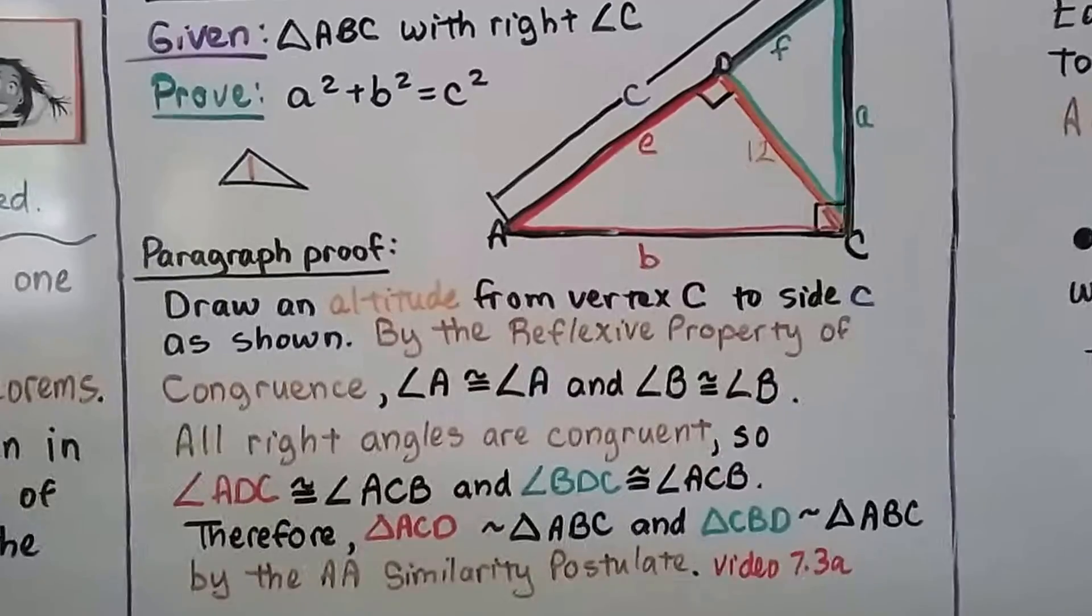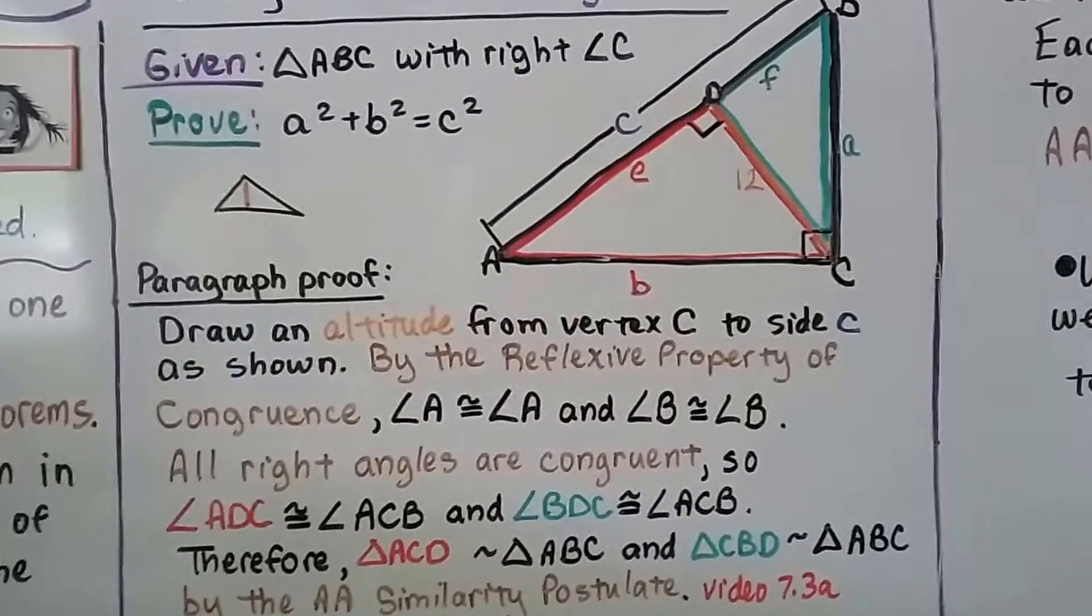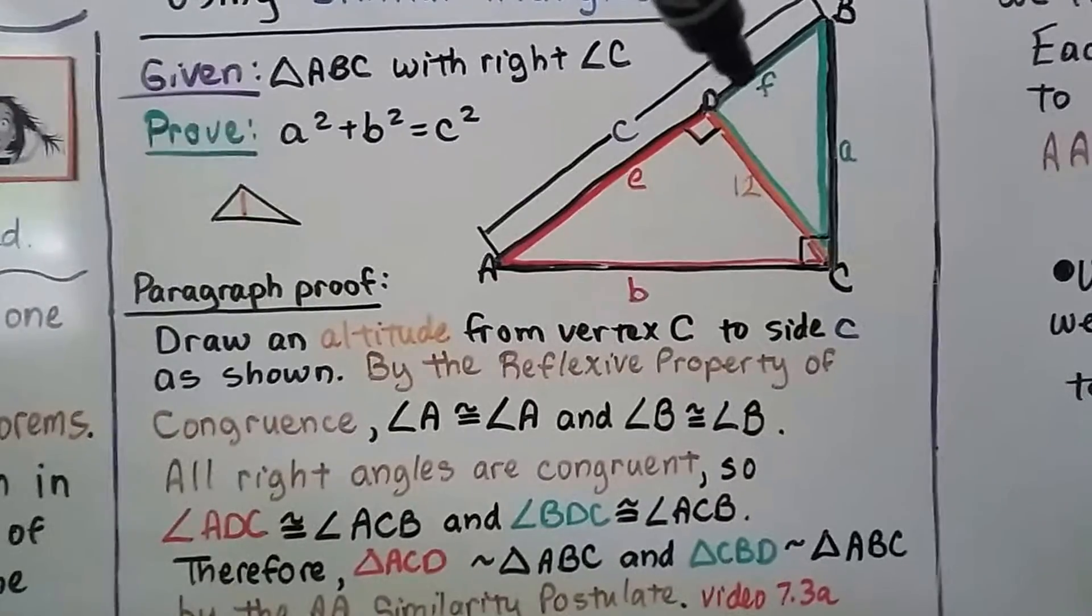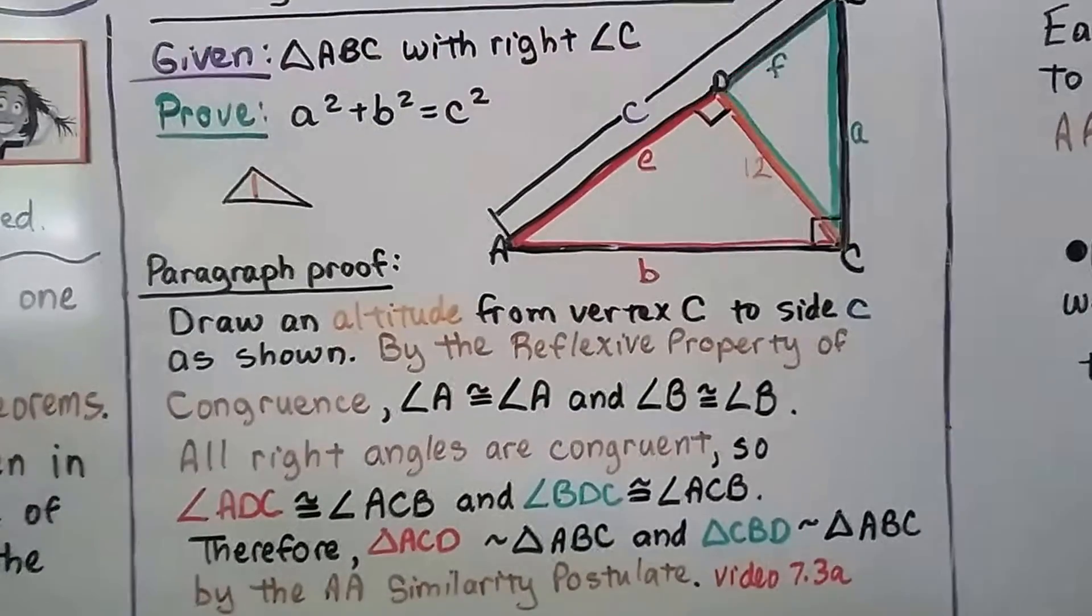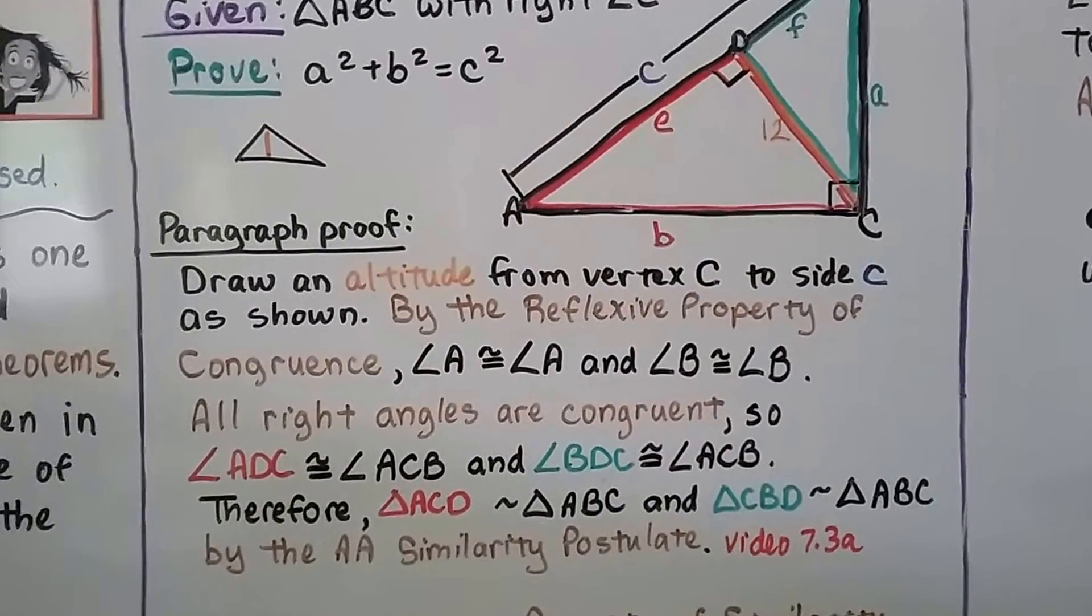Therefore, triangle ACD, the red one, is similar to the big black triangle ABC. And the green triangle CBD is similar to the big black triangle ABC by the AA similarity postulate.